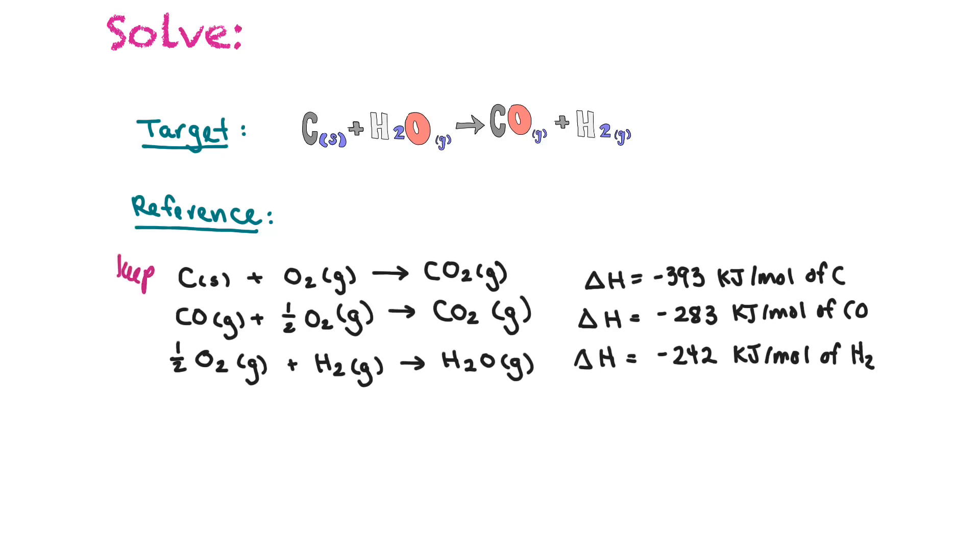The next one, we have carbon monoxide as a reactant, but we want it as a product. So we're going to flip it or reverse it. And when we do that, we have to flip the delta H. And then the next one, we have hydrogen gas as a reactant. Again, we want it as a product. So we're going to flip this reaction too. So we'll rewrite these and then cross off the things that don't belong and see if we can solve for our target delta H.